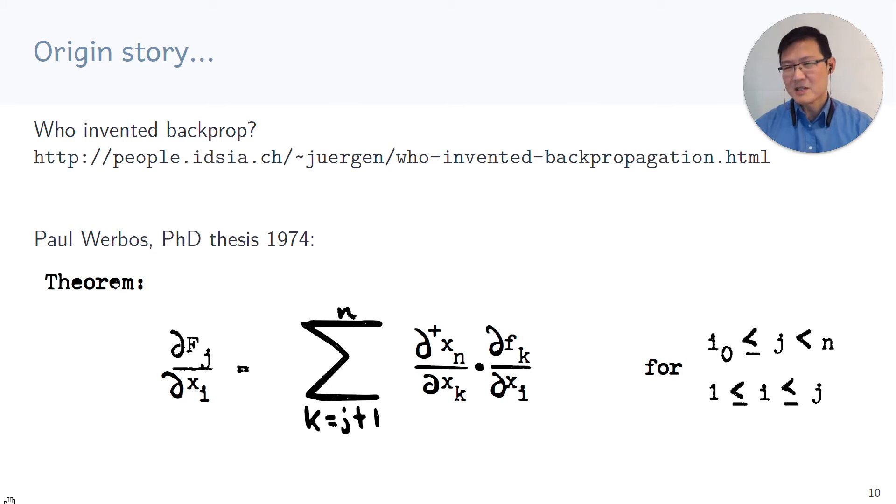I'm not going to get into the fight of who invented backpropagation. For those who are interested, have a look at the short article by Juergen Schmidhuber. But I'd just like to point out that Paul Werbos in his PhD thesis in 1974, spoke a lot about how to calculate these gradients of compositions of functions. And towards the end of the thesis, there's this beautiful typewritten theorem, which if you look at it looks very much like a modern backpropagation theorem.